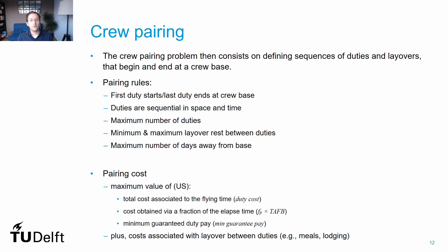In the pairing creation step, new rules have to be considered. Each crew member is allocated to a crew base — the airport from which the crew starts their operations. An airline may have multiple crew bases, but each crew member has a single crew base. Pairings should start and end at the crew base, so they can be allocated to crews from that base. There are also common agreements to respect, such as the maximum number of duty periods per week per pairing, the maximum resting time between duties, and the maximum number of days the crew may stay away from home.